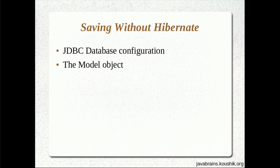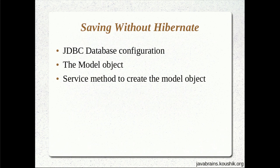Next, we need to write the model object — the object that we want to save. Let's take an example user object. In order to save the user object, we need to have the object in place and write the class. After that, we need to have a service method that instantiates this model object — some method which provides values to the object and creates an object that is required to be saved.